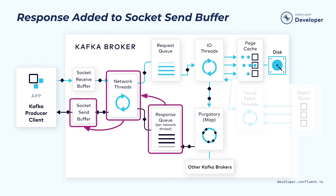From there, the network thread will pick up the generated response and send the response data into the send socket buffer. The network thread is also responsible for enforcing ordering of requests coming from a single client. What it does is it will only take one request from a client at a time, and only after the completion of this request — when all the bytes for the response have been sent — will this network thread be able to take up the next request from that client. This is a pretty simple way to enforce ordering from a particular client.